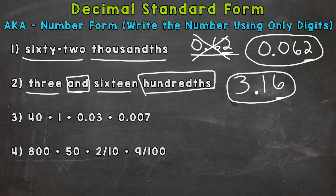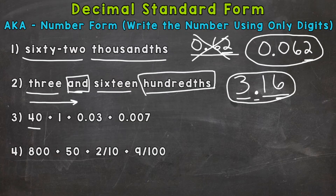Always double-check your standard form with the word form to make sure they match. We have three and 16 hundredths — we're good. Number three uses expanded form. We're going to start with 40. Work your way left to right. We start with a four that has a value of 40, so we know we're starting in the tens place.